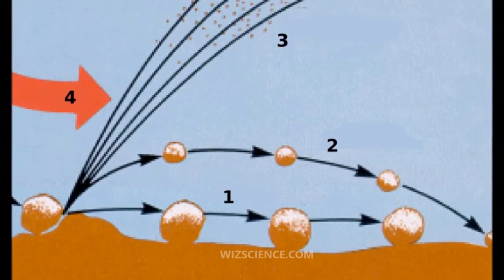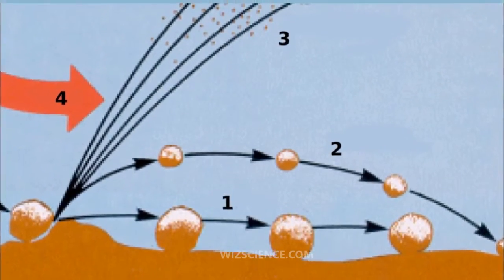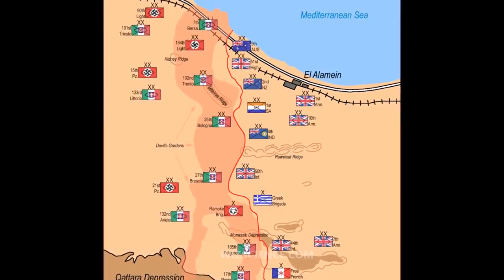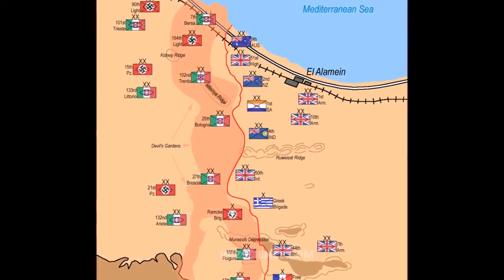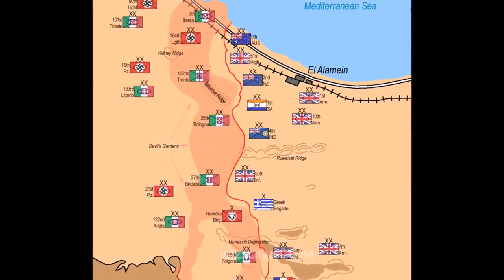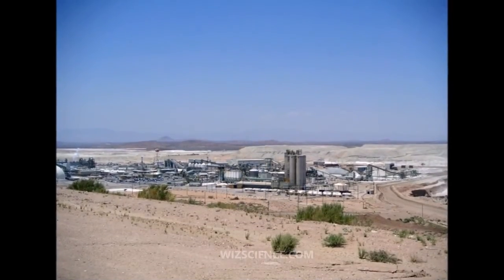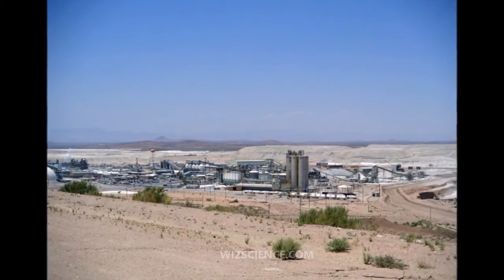Other deserts are flat, stony plains where all the fine material has been blown away and the surface consists of a mosaic of smooth stones. These areas are known as desert pavements, and little further erosion takes place.